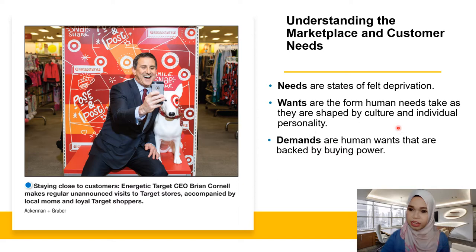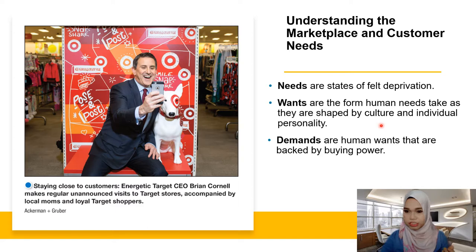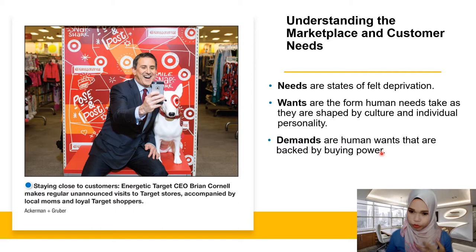Wants are actually the form of human needs shaped by culture and individual personality. Wants are what you actually desire to have, what you feel like you want to have. It is not something that you need whereby if you don't have it you will die or can't live without it. Wants are mostly things related to products or services that make you feel more comfortable, shaped by culture or even your own personality. While demands are actually human wants that are backed up by buying power, meaning to say if you have the needs and also the wants, then you are qualified as a demand, backed with this buying power — you have the authority to buy and the money to buy the product.